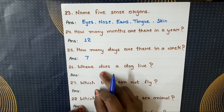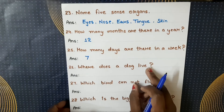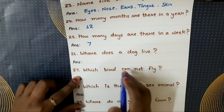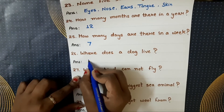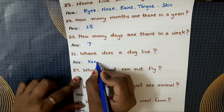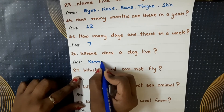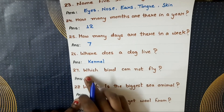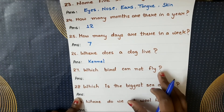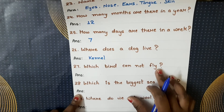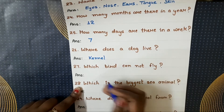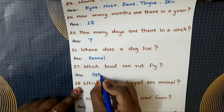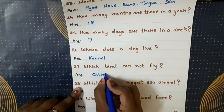Where does a dog live? Dog kahan rehta hai? The dog lives in a kennel. Which bird cannot fly? Kaunsi aisi bird hai jo ur nahin sakti? The answer is ostrich.